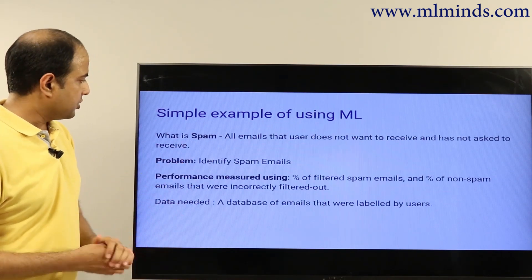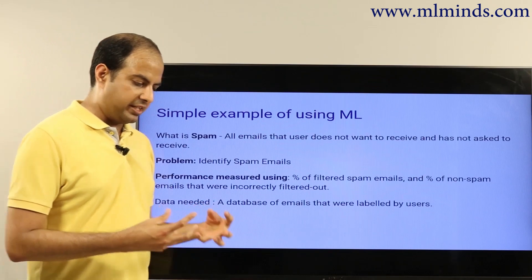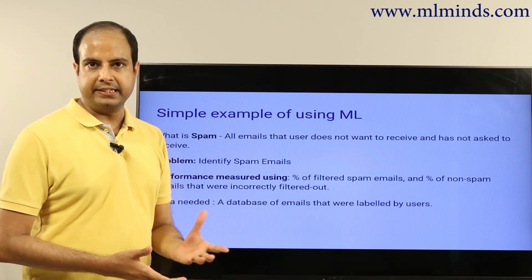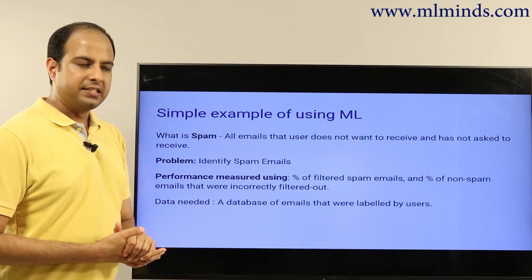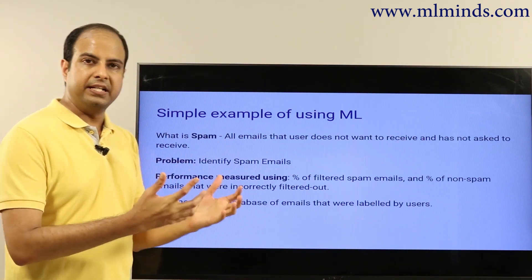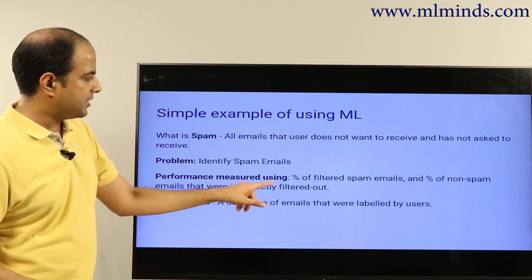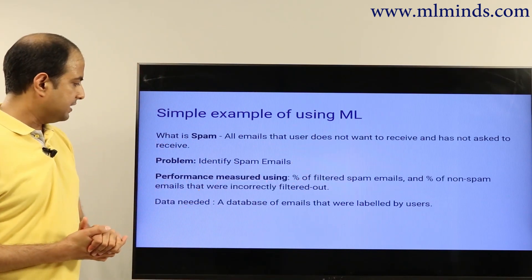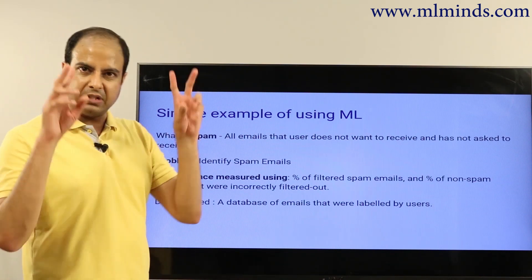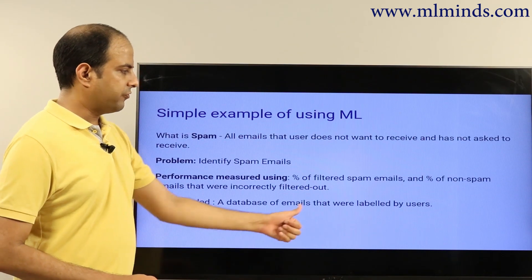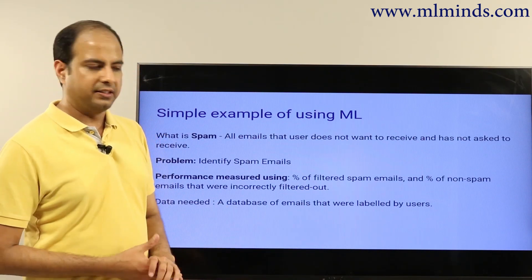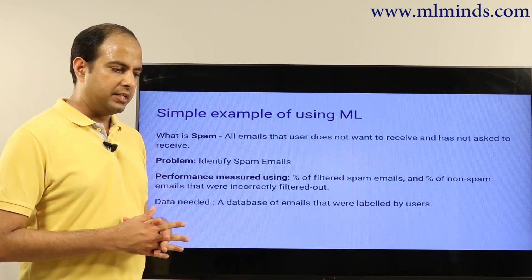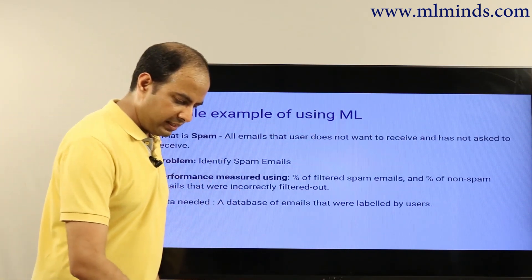Spam refers to all emails that a user does not want to receive or has not asked to be delivered. Machine learning models use labeled training data to learn this classifier so it can accurately predict whether an email is spam or not. The accuracy is measured in terms of percent of spam emails correctly filtered and percent of non-spam emails incorrectly filtered. The model needs a database of emails labeled by users — perhaps a thousand spam and a thousand non-spam — so it can do case-based learning and come up with a good model.